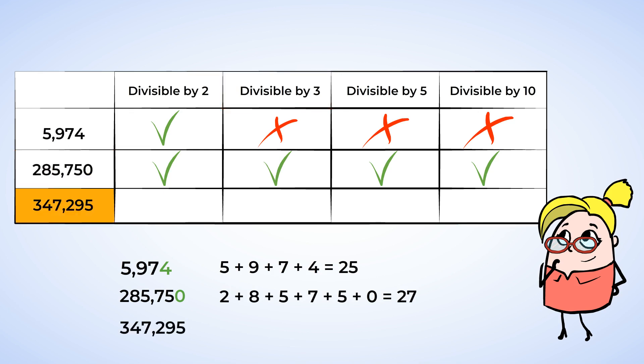And last is 347,295. The last number is 5. Well, 5 is not even, and this tells us that it is divisible by 5, but not by 2 or by 10. Now we can add the digits together to check if it's divisible by 3. And when we add the digits together, we get 30. 30 is a multiple of 3. So 347,295 is divisible by 3 and 5.